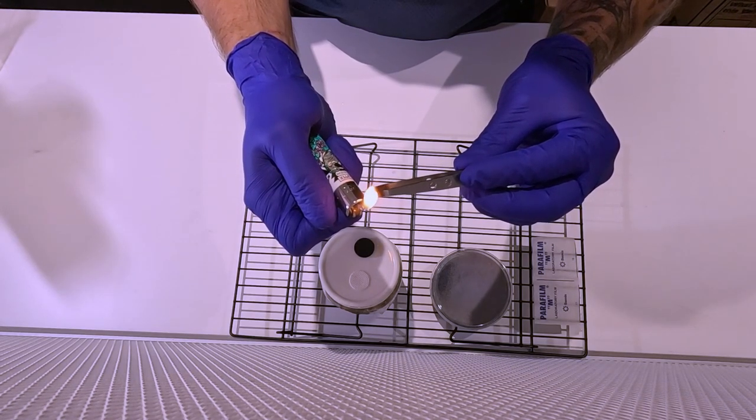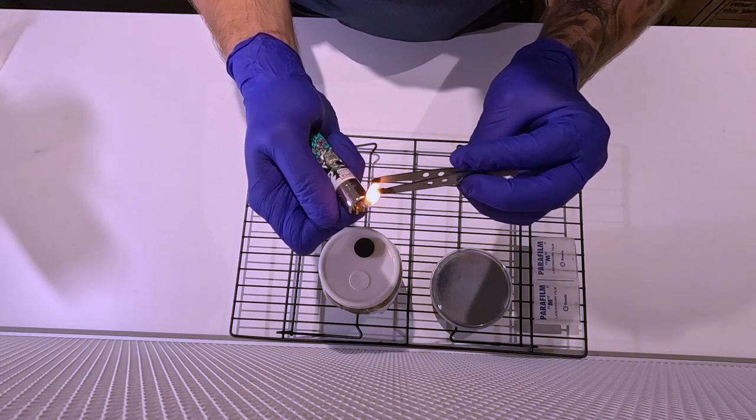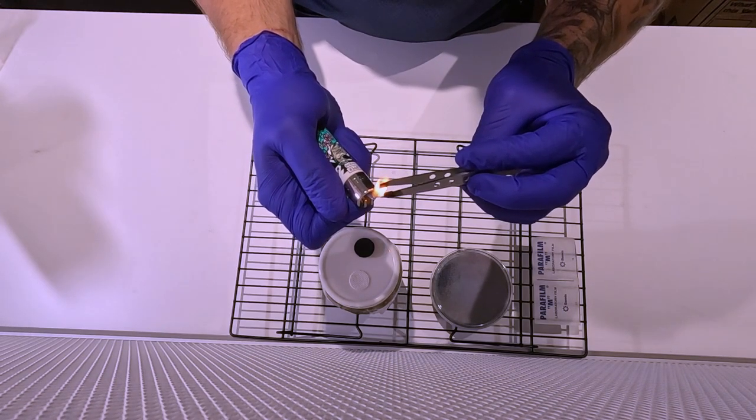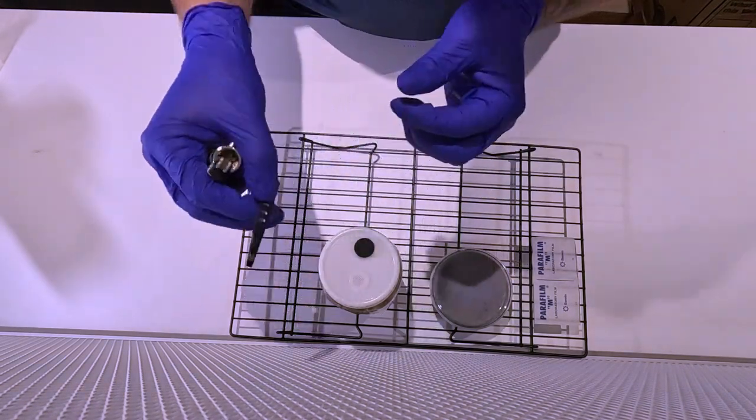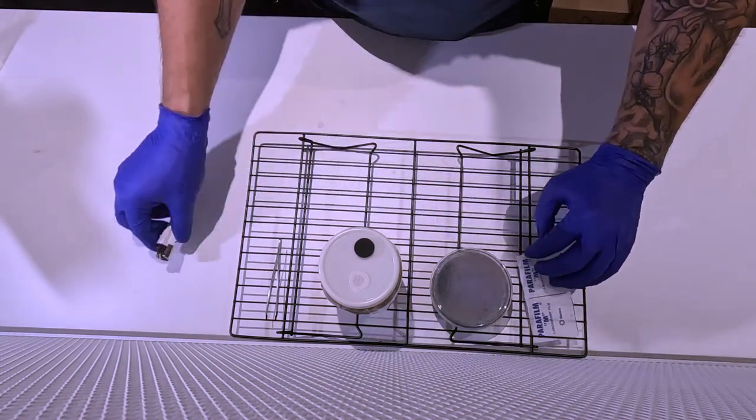Set it down and leave it to sit on the rack for a little while just to let the tweezers cool. Then we have parafilm which we'll use to seal up the agar again. I do have all my agar individually sealed as a rule of thumb.